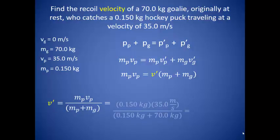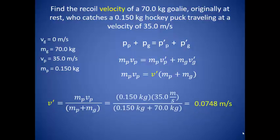A little bit of math, and we find the recoil velocity of 0.0748 meters per second. Now if you think about this situation, that small velocity makes a lot of sense. The goalie is large enough compared to the puck that he is not going to be moving very fast because of the puck's impact.